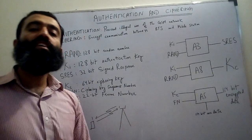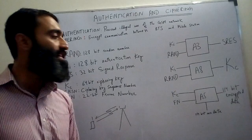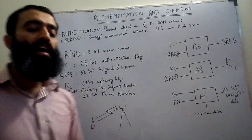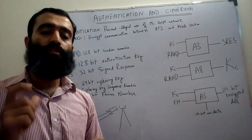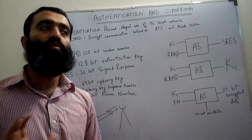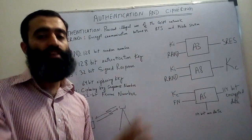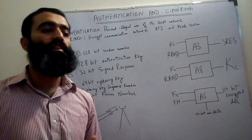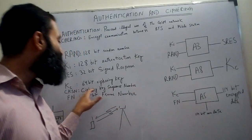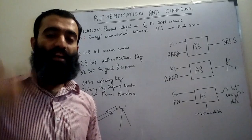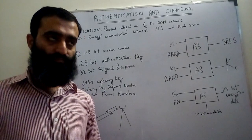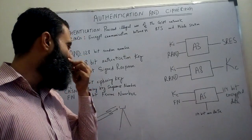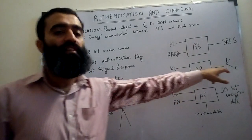There is another associated number with the ciphering key known as the ciphering key sequence number. Because the ciphering key is used for encryption of data, it is never sent on the air interface. In some conditions, the ciphering key sequence number is sent over the air interface from the mobile station to the network instead of the ciphering key itself.